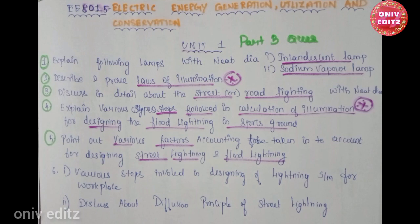This is the calculation of illumination for designing flood lighting. The 6th question covers various steps involved in designing a lighting system for the workplace. That is, discuss about the diffusion principle of street lighting.